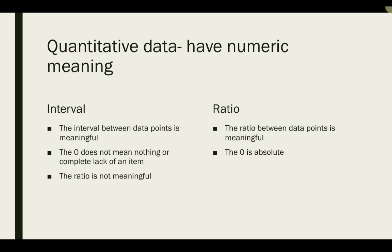Quantitative data, on the other hand, data that has numeric meaning, can be classified as interval or ratio. Interval data has a meaningful interval between the data points, however, not an absolute zero and no meaningful ratio.